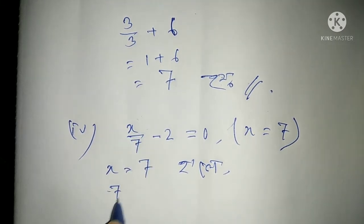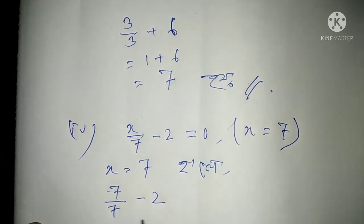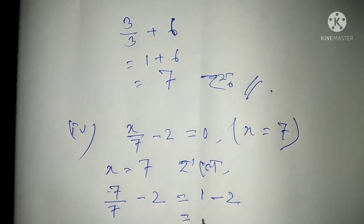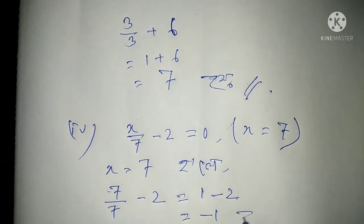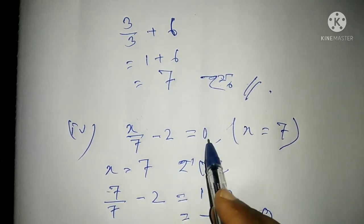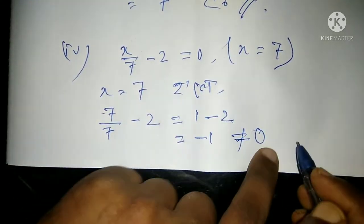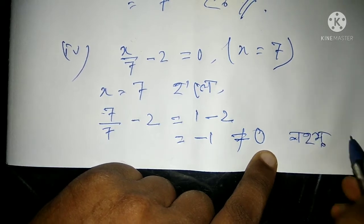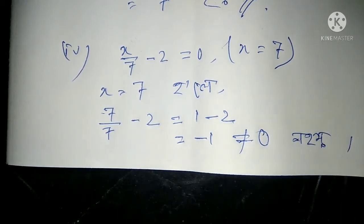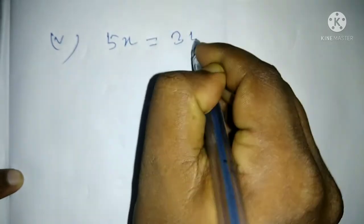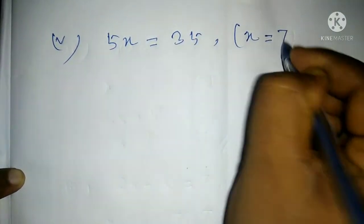x equal to 0. Not equal to 0. x equal to — first number to keep us. 5x is equal to 35. x is equal to 7.